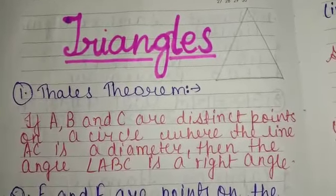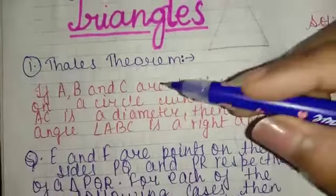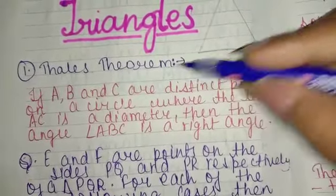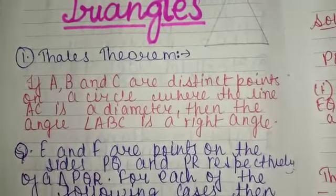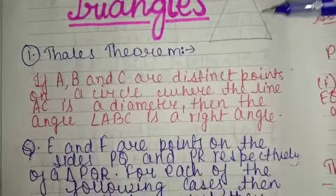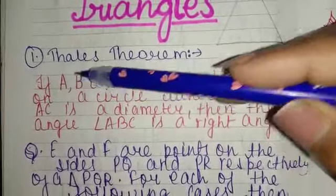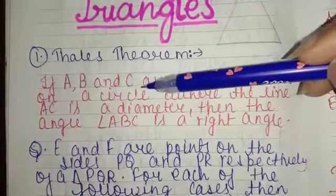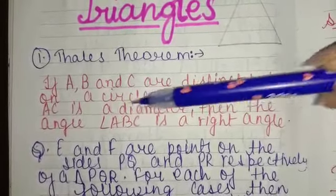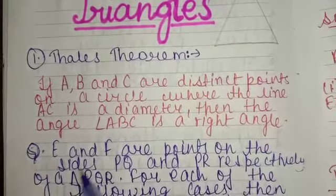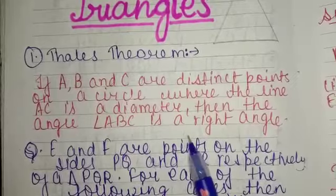When you read Triangle Chapter, we will get the Thales Theorem. Now, the Thales Theorem is also very important and easy. So, we will know the statement of Thales Theorem. If A, B and C are distinct points on a circle, where the line AC is a diameter, then the angle ABC is a right angle.